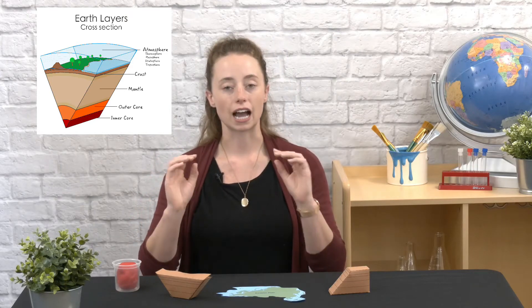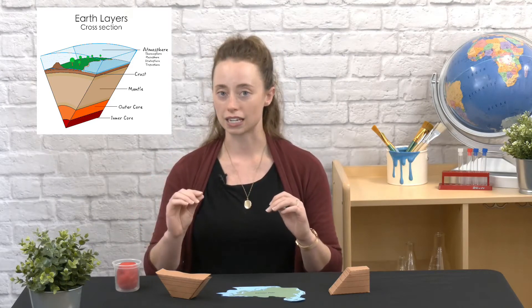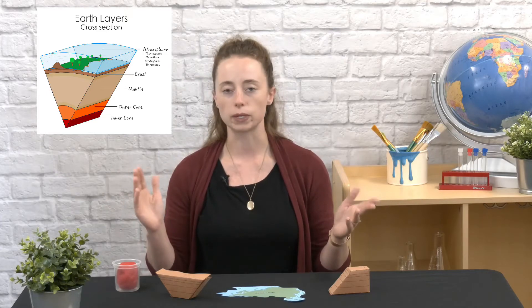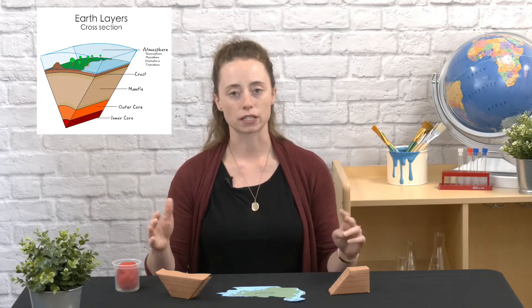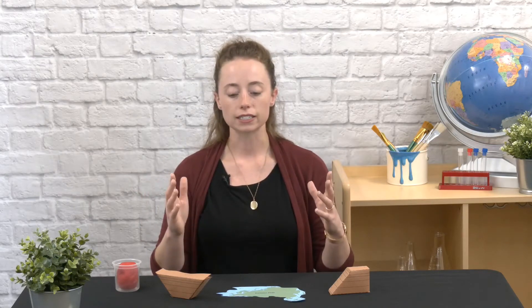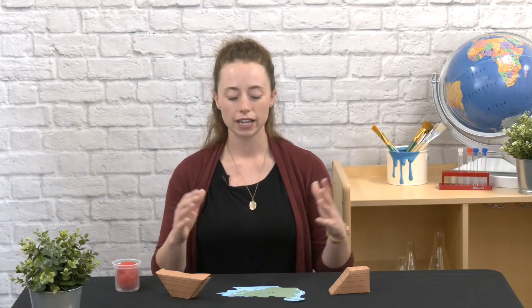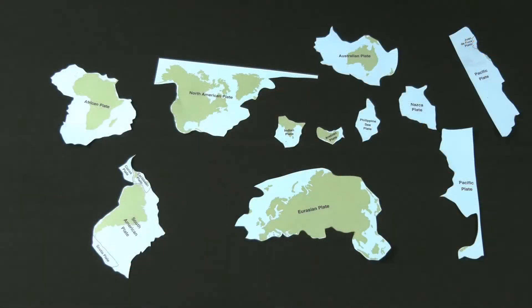The crust is the outermost layer, and it is also the thinnest. It makes up all of the land that we see and inhabit, and it makes up all of the ocean floor. The crust is not one solid piece — it's made up of plates, and you can think of the plates as like pieces of a puzzle. Let's look at the pieces of plate that you have in your kits. If you don't have them, it's really easy to find these things online and just print them off, and let's see if we can fit them together.